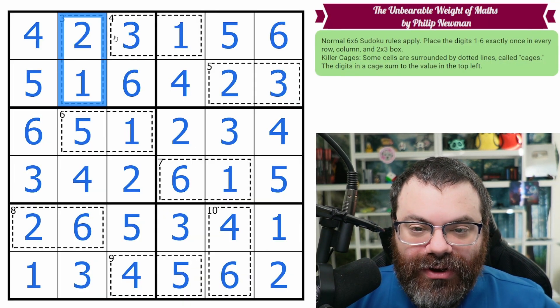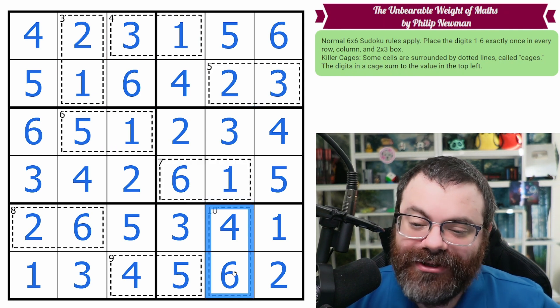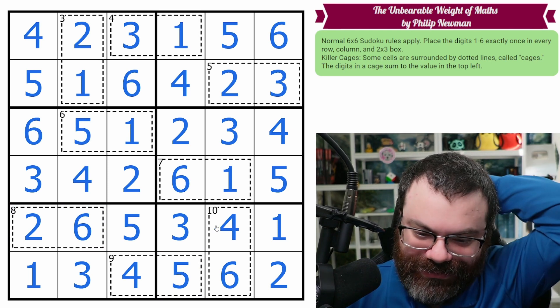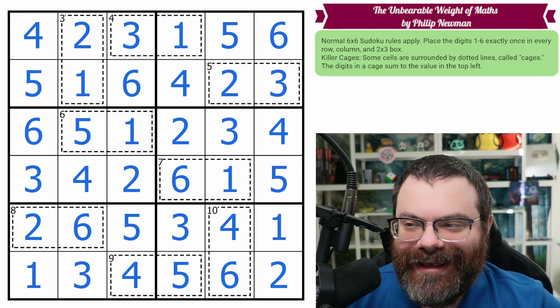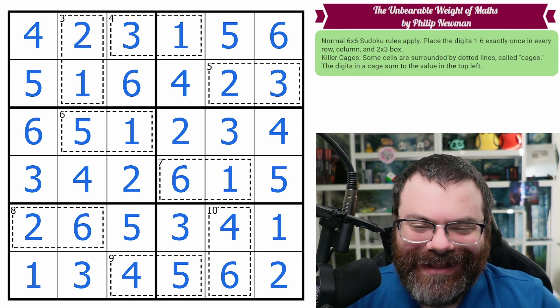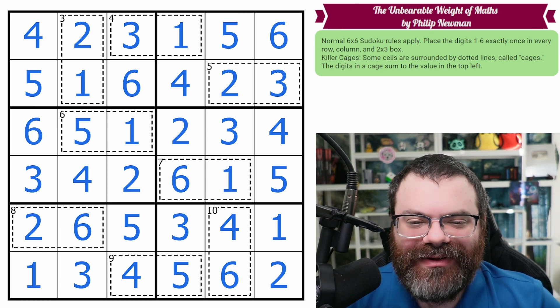I think the trick is go from the lowest cages until they become too ambiguous, then go from the highest cages. And then that was it, really. Just Sudoku from there. So that was neat. Thanks, Philip. I enjoyed that. I didn't feel unbearably weighted by Maths in this one. Anyway, I hope you enjoyed it. If you did, then why not leave a like, subscribe, and a kind comment below.